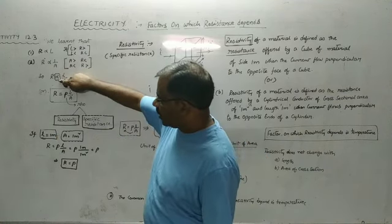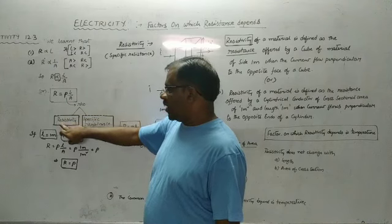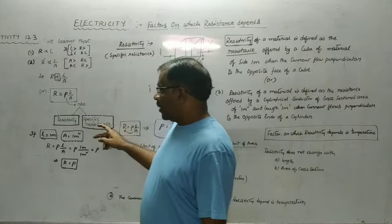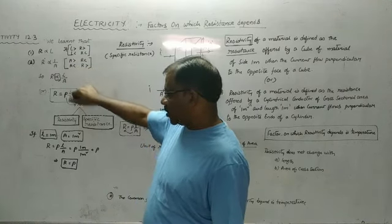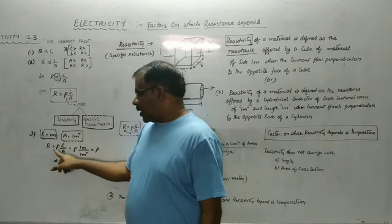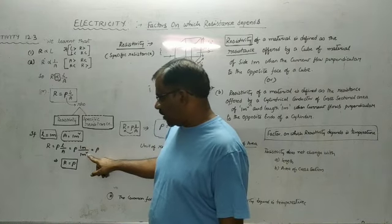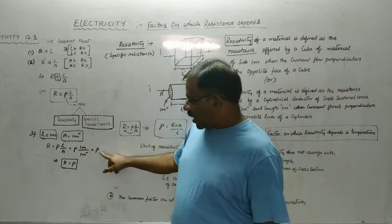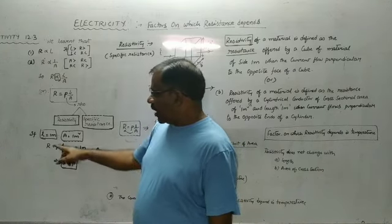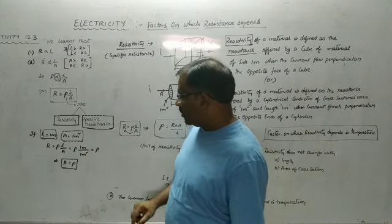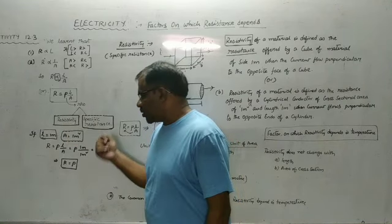This proportionality constant is represented by the symbol rho (ρ) and its value is called resistivity or specific resistance. In this formula, if we substitute the length as 1 meter and area of cross-section as 1 meter square, we get R = ρ × (1/1), which gives resistance equal to resistivity. So resistance equals resistivity when the conductor has a length of 1 meter and area of cross-section of 1 meter square.